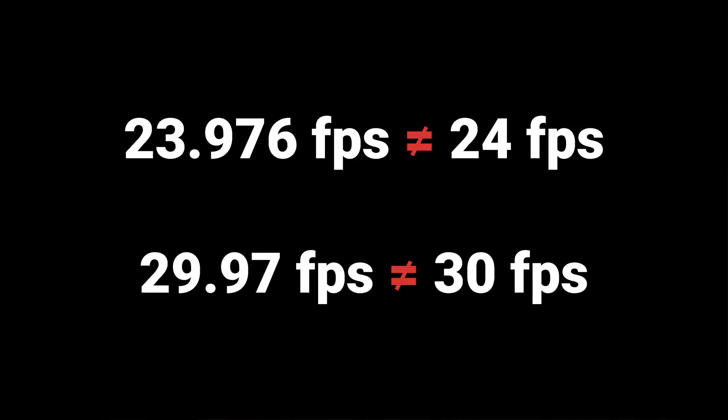Something that unfortunately causes more confusion is that frame rates are often incorrectly referred to as their whole integer. For example, 23.976 frames per second is often incorrectly referred to as 24 frames per second, and 29.97 is often incorrectly referred to as 30 frames per second. It should be noted that True24 is still used for analog film, and some high-end digital cinema cameras can also shoot in True24.